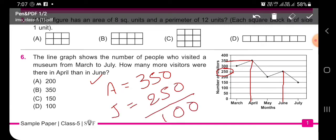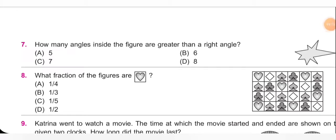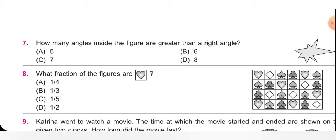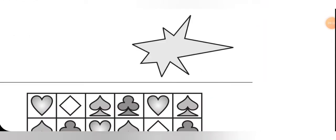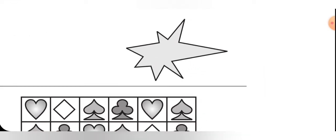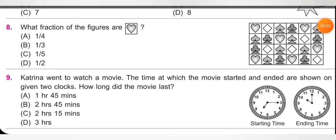Next question: how many angles inside the figure are greater than a right angle — greater than 90 degrees? Counting all angles in the figure: 1, 2, 3, 4, 5, 6, 7 — seven angles are greater than 90 degrees. Option C is correct.